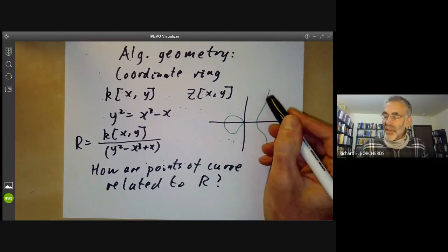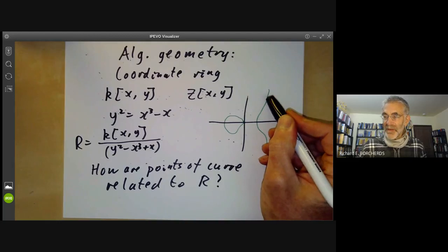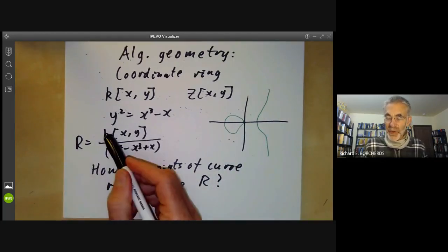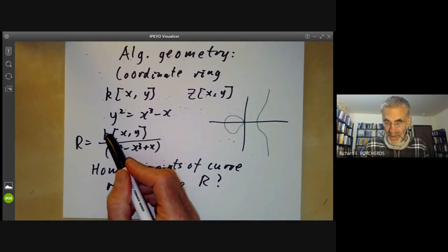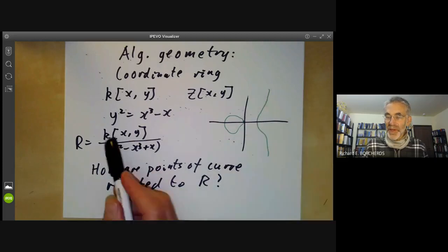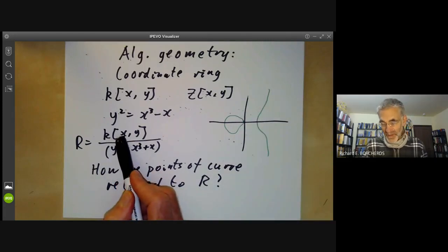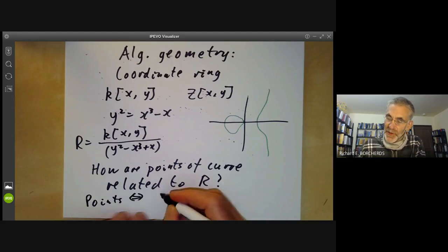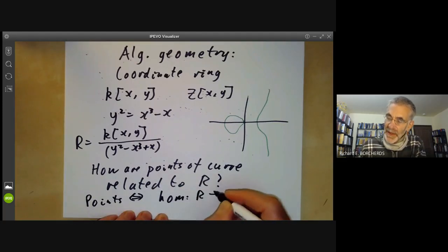For instance, a point of the elliptic curve corresponds to a homomorphism from the ring R to the field K, because you can think of a point as corresponding to the function taking the value of a coordinate function at that point. So points correspond to homomorphisms from R to K.